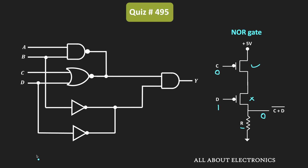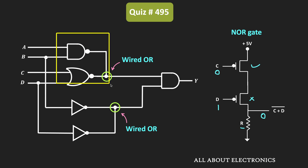All the logic gates in the given circuit are implemented using PMOS transistors. Some of the nodes in the given logic circuit are intentionally shorted to implement the wired logic. The output of the NAND gate and the NOR gate are connected together. Likewise, the outputs of two NOR gates are also connected together. These two nodes implement the wired OR logic. Let us understand how this node will implement the OR gate by looking at where the outputs of the NAND gate and NOR gate are interconnected.